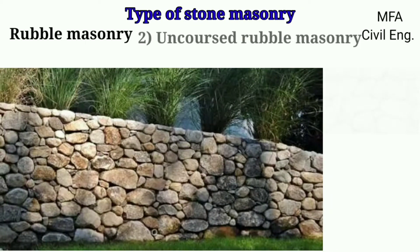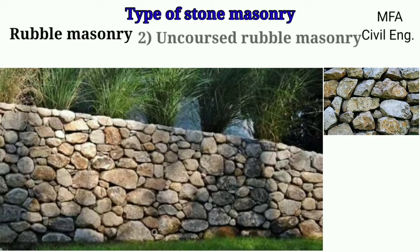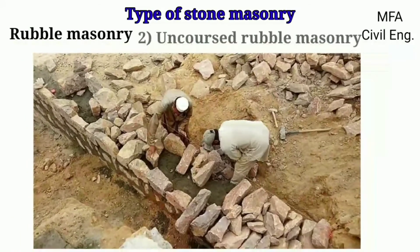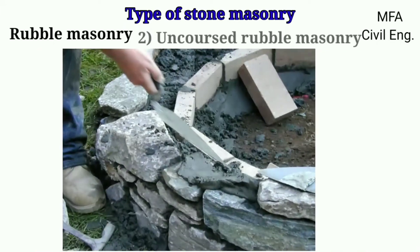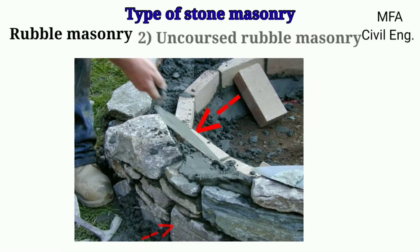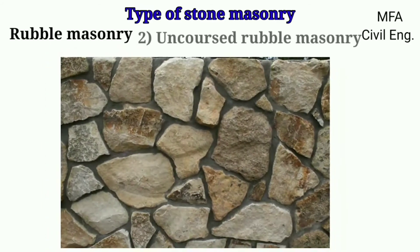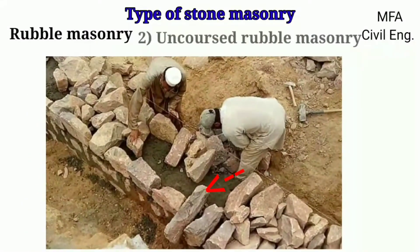In uncoursed rubble masonry, stones or rubbles are used without any dressing, meaning the shape and size of the rubble or stone used in the masonry is not the same but varies. The mason selects stones at random from the heap and lays them in line and plumb so as to form a strong bond. Before laying the stone, all projecting corners are slightly knocked off with a hammer. The joints are filled with mortar using a steel trowel and finished flush. Joints should not exceed 13 mm thickness, and large stones are used at corners to increase strength. Through stones are also provided at intervals to interlock the facing and backing, which increases the strength of the masonry.